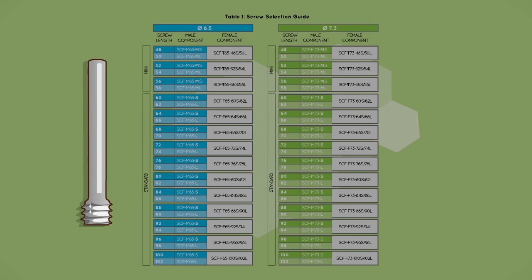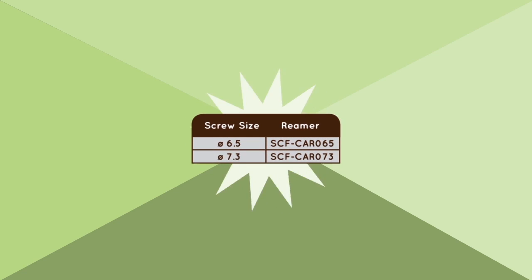Step 4, Reaming: Using the reamer corresponding to the desired screw size, ream up to but not through the growth plate.